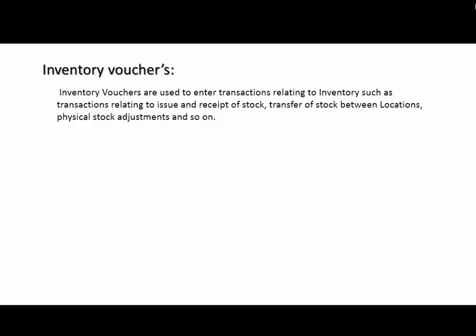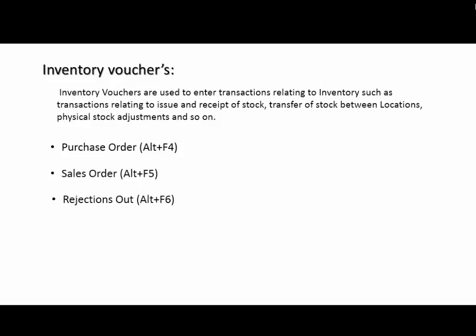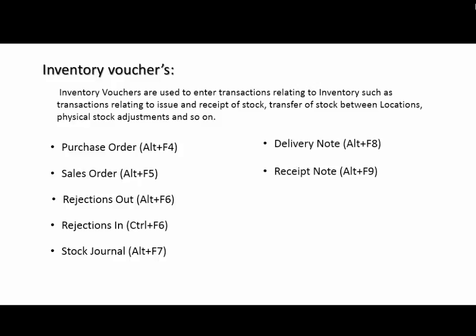There are many types of inventory vouchers. First is Purchase Order, the key used is ALT+F4. Second is Sales Order, ALT+F5. Rejection Out, ALT+F6. Rejection In, CTRL+F6. Then Stock Journal, ALT+F7. Delivery Notes, ALT+F8. Receipt Notes, ALT+F9. And the last is Physical Stock vouchers, the key used is ALT+F10.